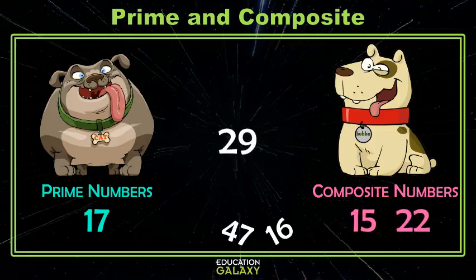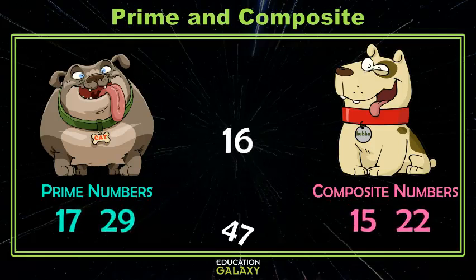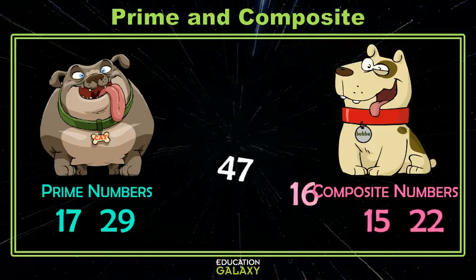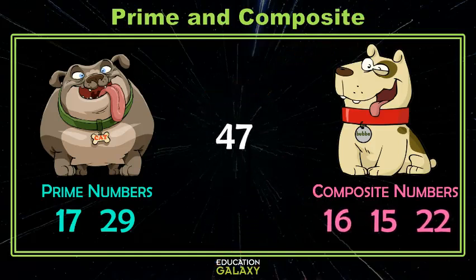29 has 1 and 29 as factors, and I can't think of any others, so we'll give that one to the prime group. 16 — I can think of several here: 8 and 2, and 4 and 4, so let's just throw that in our composite pile.